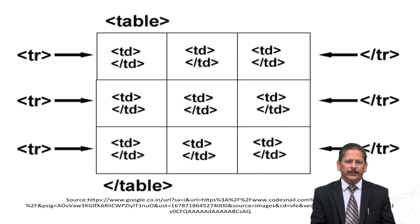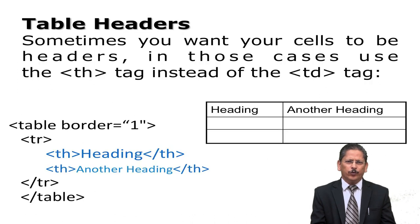Sometimes you want your cell to be a header. In those cases, use the TH tag. The TH tag is used for the table heading, and the TD tag is used for the table data.